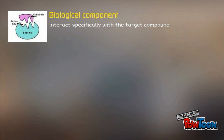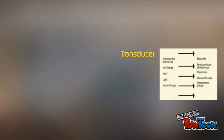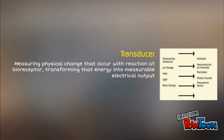The biological component is a component used to interact specifically with a target compound, such as micro-organisms, tissue, cells, organelles, nucleic acids, enzymes, and antibodies. The transducer acts as an interface that measures the physical change that occurs with the reaction aided by the receptor, then transforming that energy into a measurable electrical output.